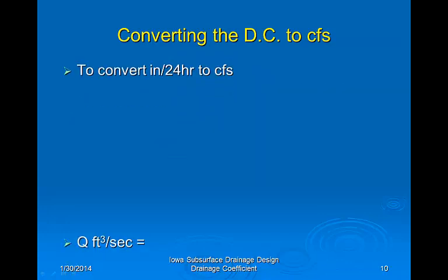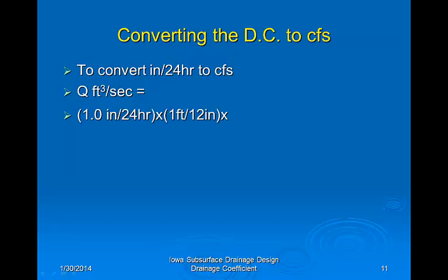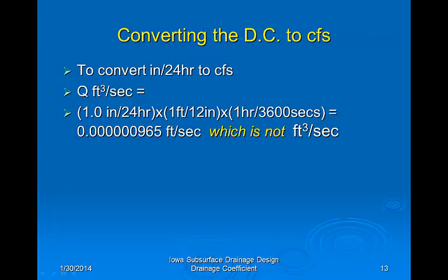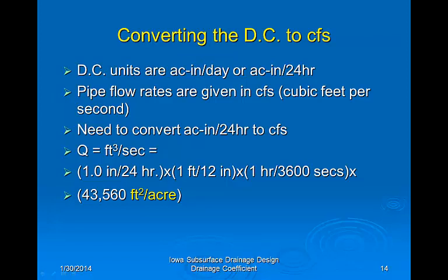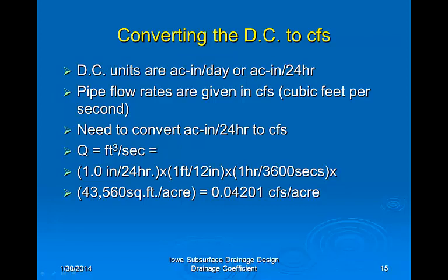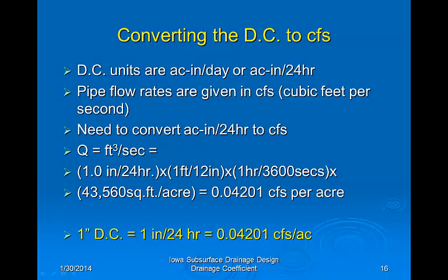To make the unit conversion from inches per 24 hours to cubic feet per second, start with 1 inch per 24 hours and use a factor to change inches to feet. Then use a factor to change hours to seconds, giving a very small number in feet per second. To get the numerator into cubic feet, use the factor feet squared per acre. Performing the multiplication, we get the answer in cubic feet per second per acre.